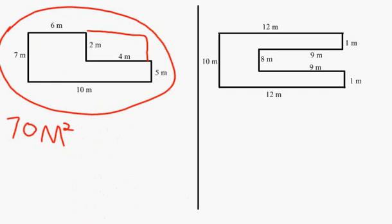After that, you find the area of the empty space in the triangle. The length of the empty space would be 2 meters and the width would be 4 meters. Then you multiply them and get 8 meters squared.